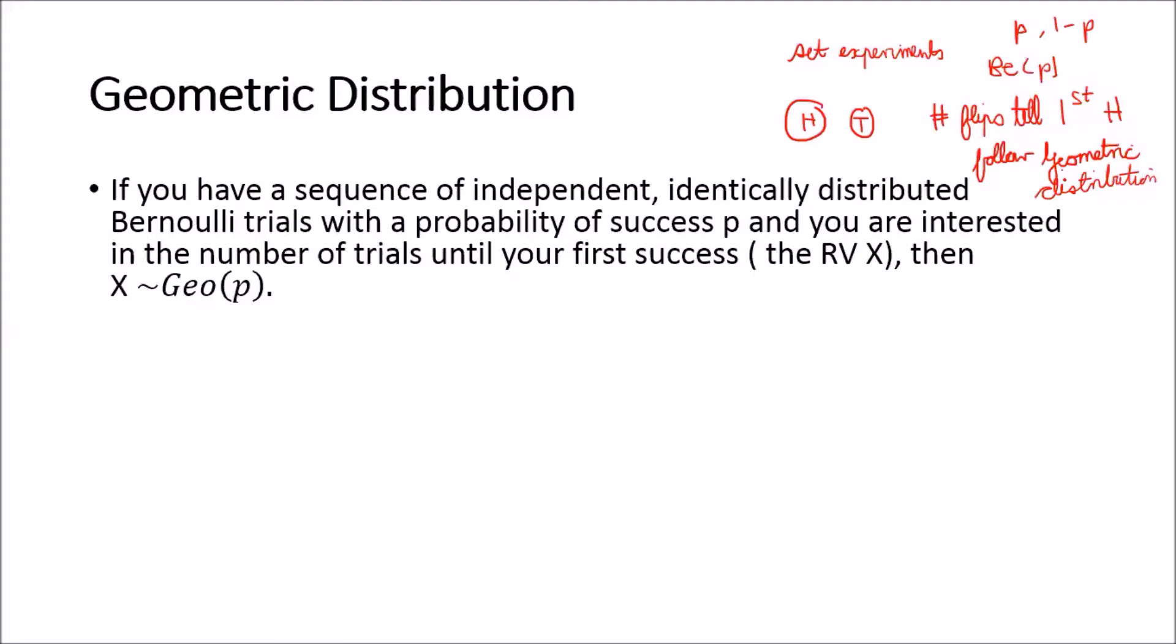So if each trial is independent and identically distributed as a Bernoulli random variable with a success probability of p and you count the number of trials till you observe your first success, then that random variable will follow the geometric distribution.